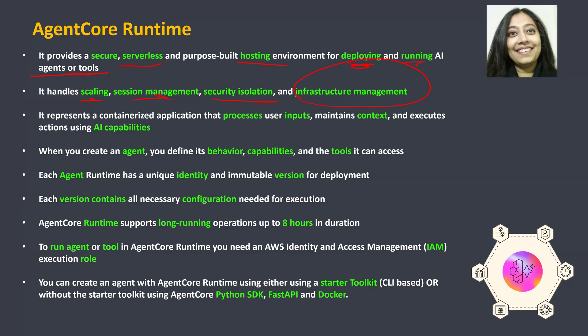Whenever you deploy your application — whether it's an agent, a tool, or whatever it may be — that particular application needs to be containerized. This is going to be very important. The agent you're deploying is going to be containerized and deployed on a Docker container. When we do the lab, you will see that those containers are created using Docker and ECR. Once containerized, it processes the user inputs, maintains the context, and executes different actions using AI capabilities.